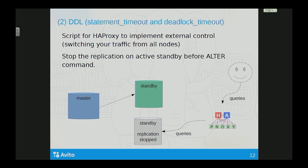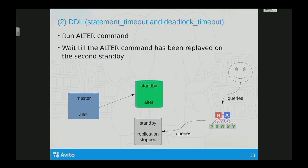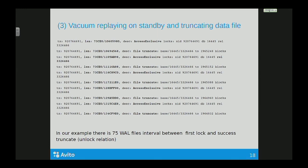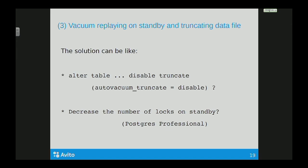To resolve this problem, I suggest the following: create an HAProxy script to switch your traffic, stop replication on your active standby, then apply the ALTER command on master, wait until this command is replayed on the inactive standby. Because we can see in the WAL file there are several excessive locks and there is no unlock. In our example, we saw 75 WAL files until an unlock came in with the commit.